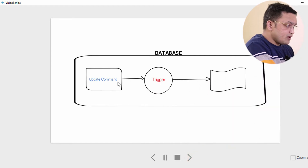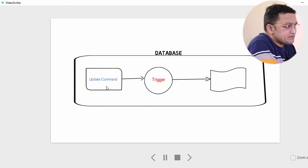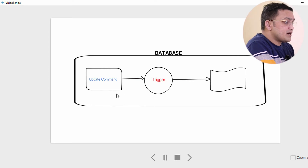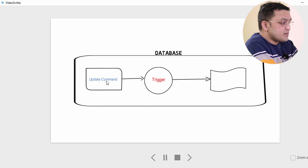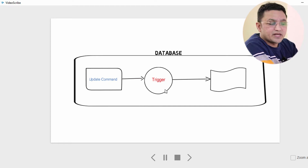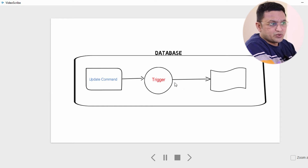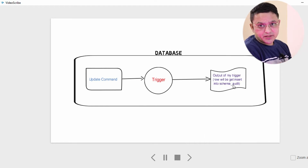As you can see on the screen, I have drawn a diagram. The outer circle represents the database. When I fire a command — say, an UPDATE command — one automatic stored program gets executed, and that is nothing but your trigger. Whatever logic I have written in this trigger will be executed. That is your trigger.